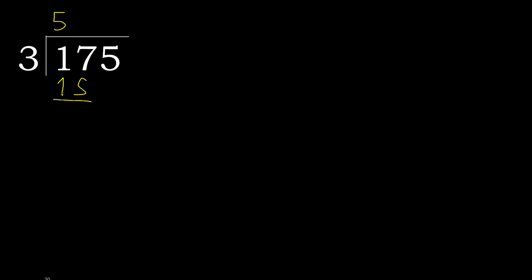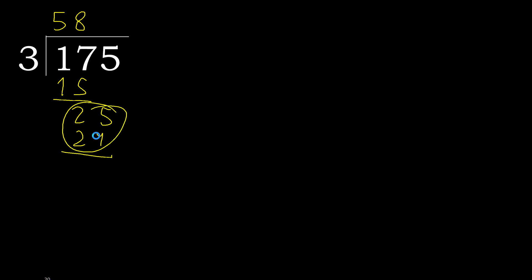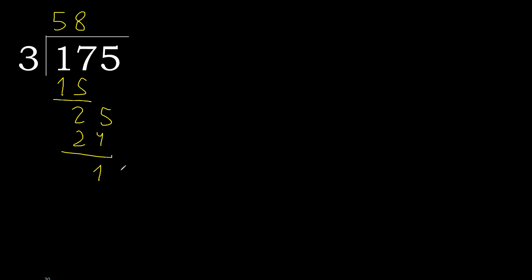17 minus 15 is 2. Next, bring down 5 to get 25. 3 multiplied by 9 is 27 — that is greater. 3 multiplied by 8 is 24 — 24 is not greater, so 8 is our digit. Subtract: 25 minus 24 is 1. There is no next digit, so the whole number part is complete.